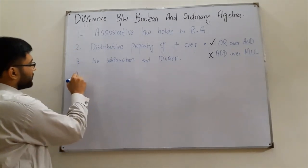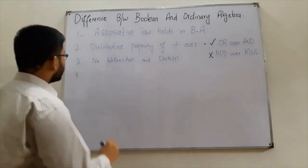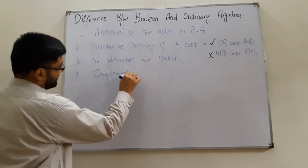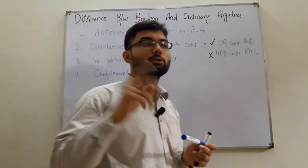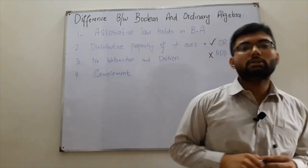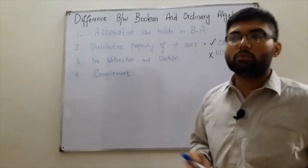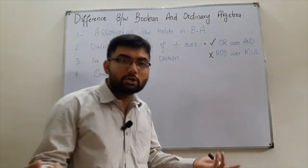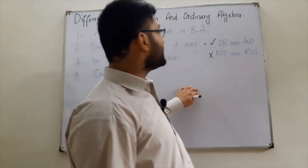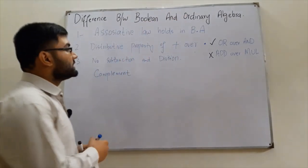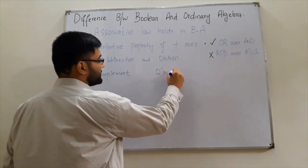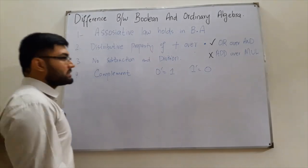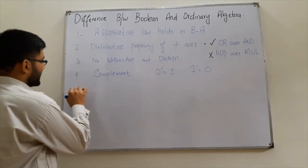The fourth point is about the complement. We have the idea of complement only in boolean algebra. We do not have any complement in ordinary algebra — what would be the complement of 4 or 45? Nothing. Whereas in boolean algebra, the complement of 0 is 1 and the complement of 1 is 0.